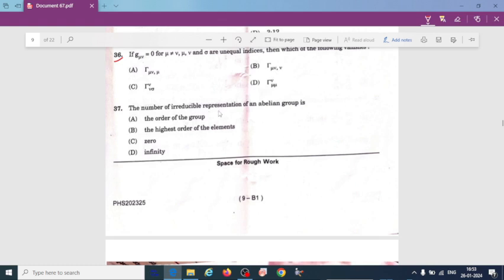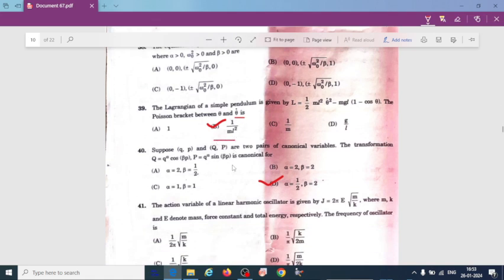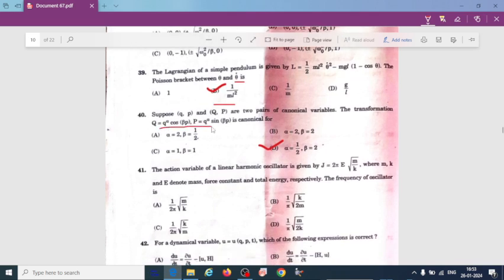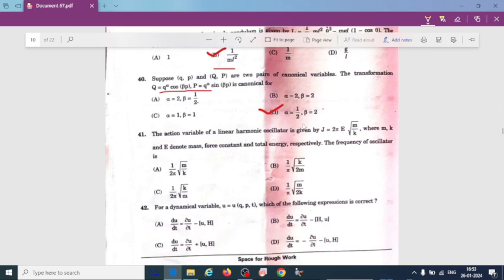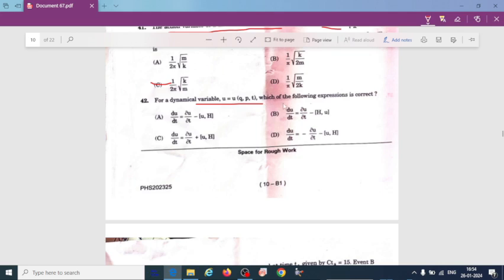The number of irreducible representation of an abelian group - it depends upon the order of the group. The Lagrangian of a simple pendulum is given by - the Poisson bracket between theta and theta dot you have to find. In the previous video I solved this. So the answer is 1 divided by ml square. And this also has solved in the previous video. You can just go to that. So the answer here is alpha equal to 1 divided by 2, beta equal to 2. The action variable of a linear harmonic oscillator is given by j is equal to 2 pi e into root of m divided by k, where m, k, and e denote mass, force constant, and total energy respectively. The frequency of oscillator is 1 divided by 2 pi into root of k divided by m. For the dynamical variable, which of the following expression is correct? So this is option C.